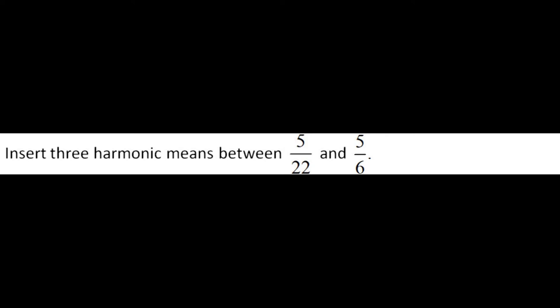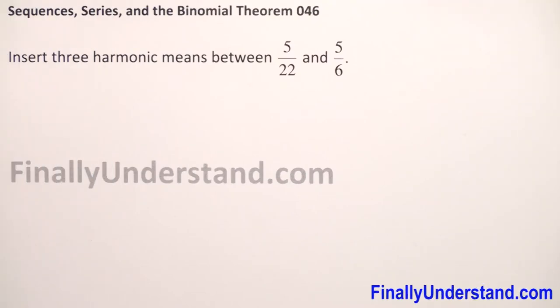Insert three harmonic means between 5 over 22 and 5 over 6. To find harmonic means between two terms of a harmonic progression, we simply take the reciprocals of the given terms, insert arithmetic means between these terms, and then take reciprocals again.